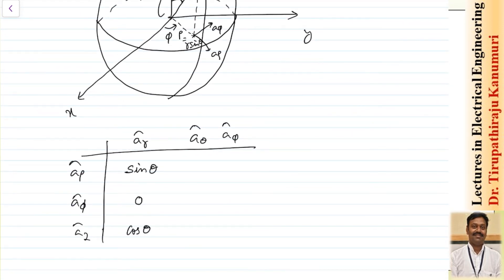For a_phi: since a_phi is the same in both cylindrical and spherical coordinate systems, a_phi dot a_rho equals 0, a_phi dot a_phi equals 1, and a_phi dot a_z equals 0.